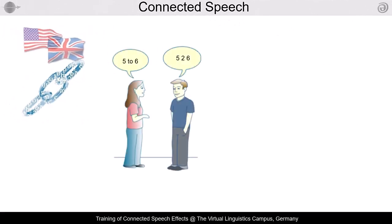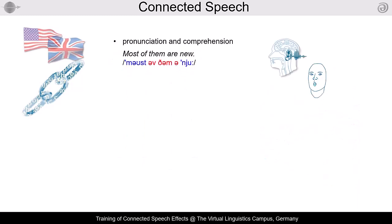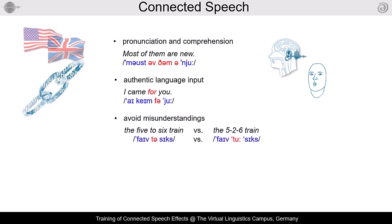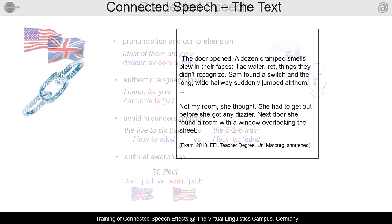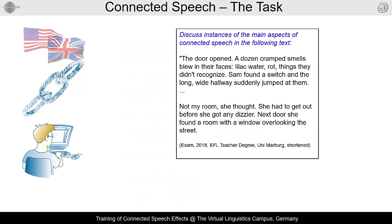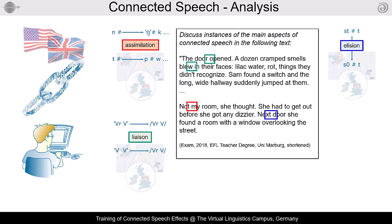For teachers of English as a foreign language, the identification and mastery of connected speech effects is highly important for their own pronunciation and comprehension, in order to provide authentic language input, to address potential misunderstandings, or to enhance cultural awareness. A common teaching method uses texts and then asks the students to identify the connected speech effects: assimilation, elision, liaison, and weakening.